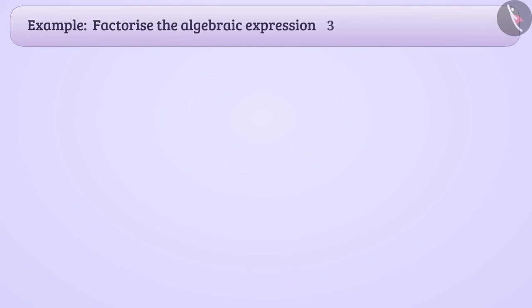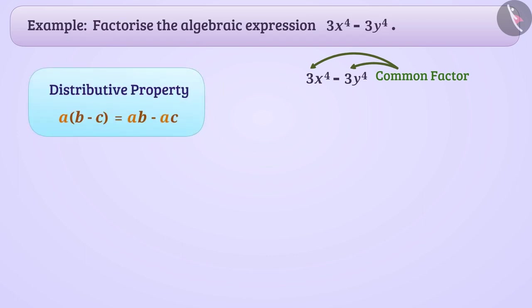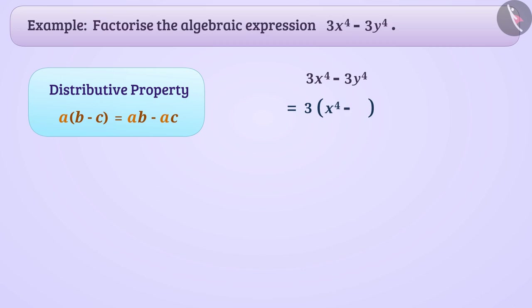Factorize the algebraic expression 3x raised to the power 4 minus 3y raised to the power 4. We see that 3 is the common factor. From the distributive property of multiplication over subtraction, we can take 3 out of the brackets: 3 into bracket x raised to the power 4 minus y raised to the power 4.